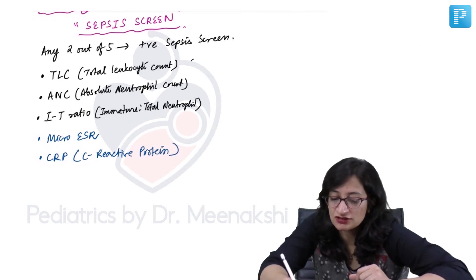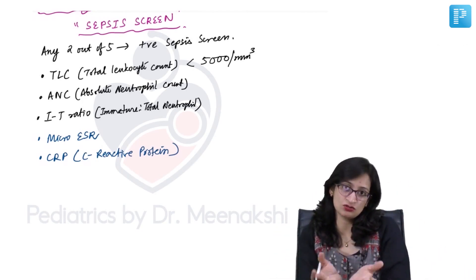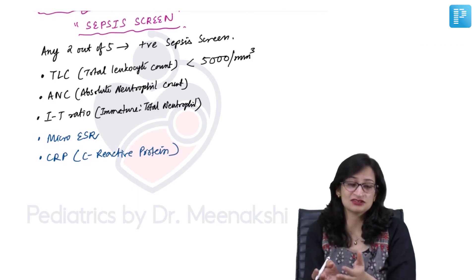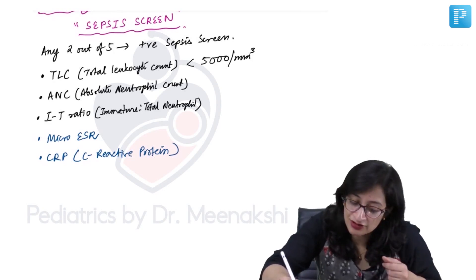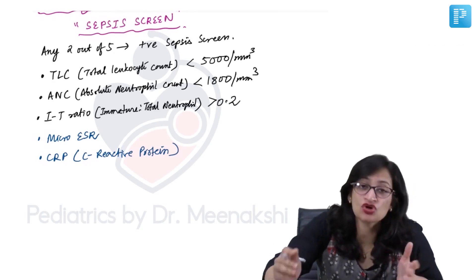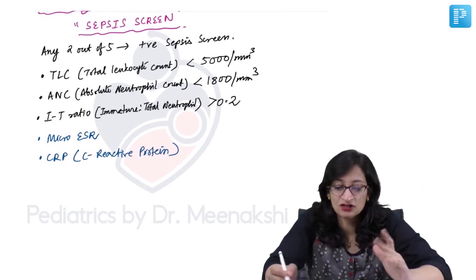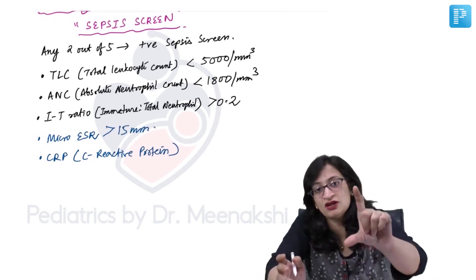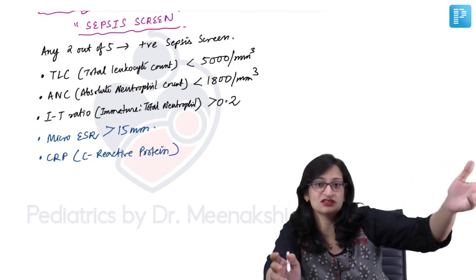If the total leukocyte count is less than 5000 per millimetre cube — this is a difference from sepsis in adults or older children — in severe sepsis in neonates, the TLC and neutrophil count may actually decrease instead of increasing. An absolute neutrophil count of less than 1800 per millimetre cube is abnormal. IT ratio more than 0.2 indicates that more immature cells — band cells, myelocytes, and metamyelocytes — are entering the circulation. Micro ESR more than 15 millimetres: it is a simple bedside test where you take blood in a micro capillary, let it stand vertical for 1 hour, and see how much fall there is.